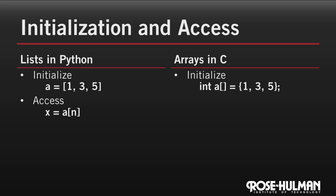To access an element of a list in Python, we use square brackets. So this says x gets the nth element of A. We use the exact same code to access an array element in C.